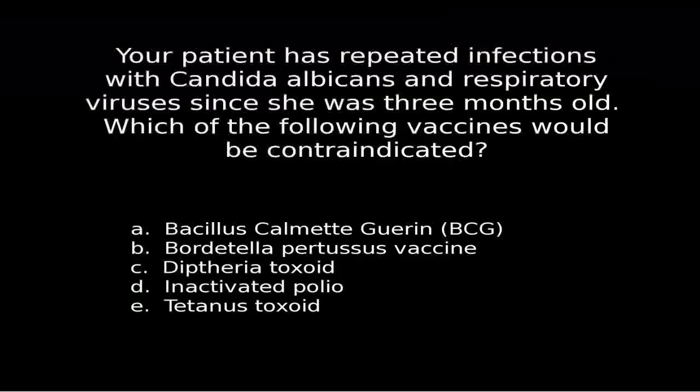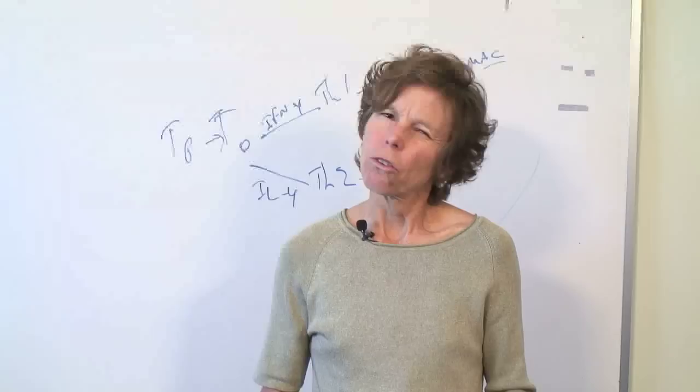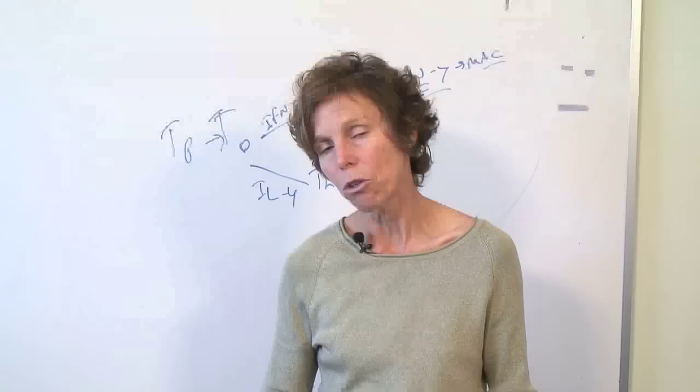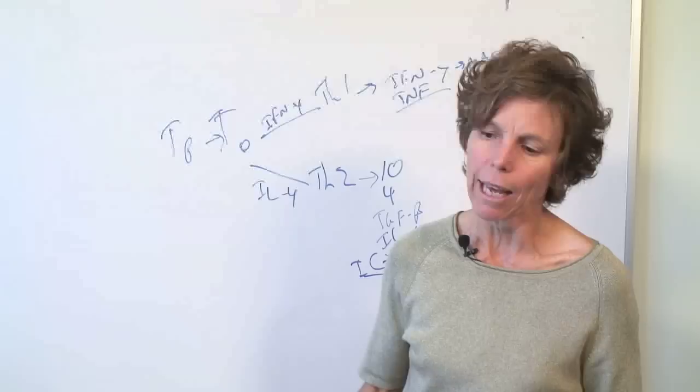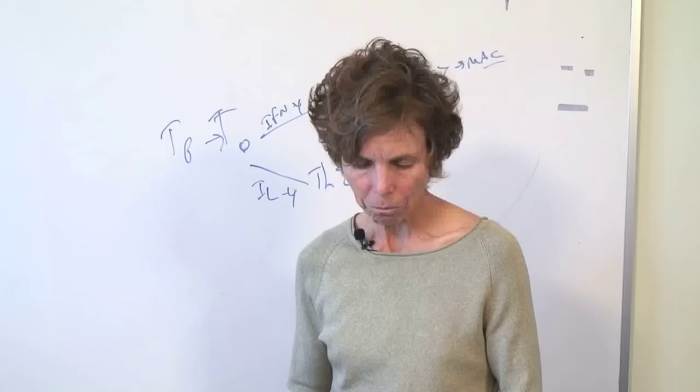Question five: your patient has repeated infections with Candida albicans and respiratory viruses since she was three months old. Which of the following vaccines would be contraindicated? You need to figure out what type of immunodeficiency she has. This is clearly an immunodeficiency. Candida albicans requires a cell-mediated response, so she has a cell-mediated deficiency.